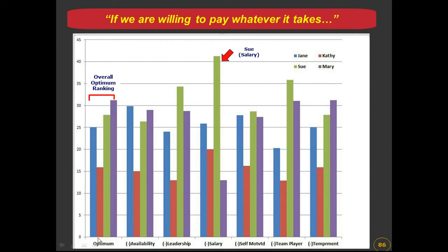We see an interesting graph. On the left-hand side there is a band — the optimum band considering all six criteria — showing Mary at 32.3% as the recommended candidate. To the right of this we have six bands, representing the n-minus-one evaluations: in each case one criterion has been removed and the simulation run for five criteria only. For example, here availability has been removed, here leadership has been removed, and here salary has been removed.